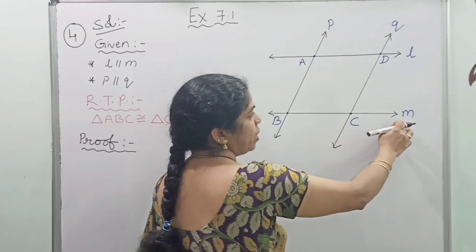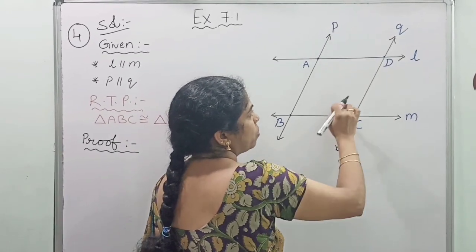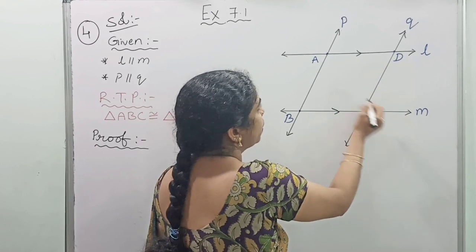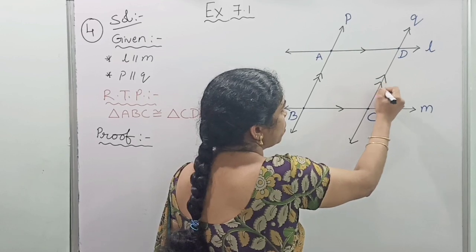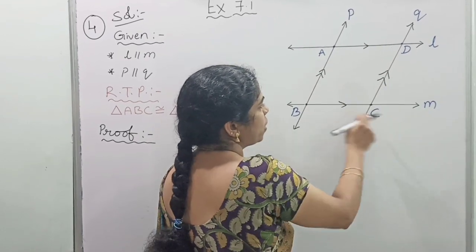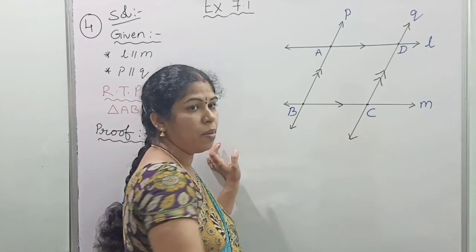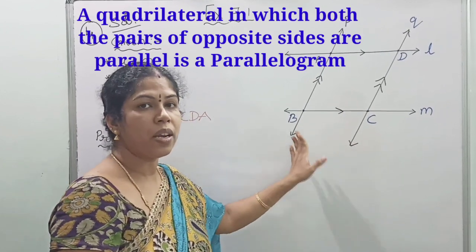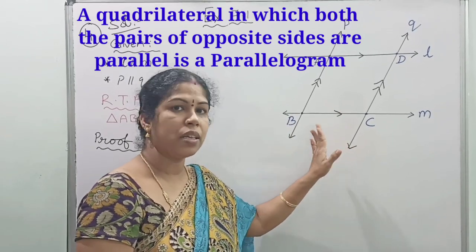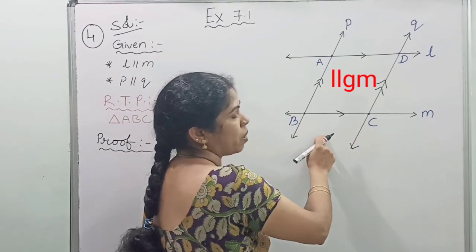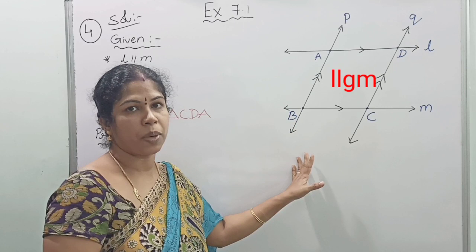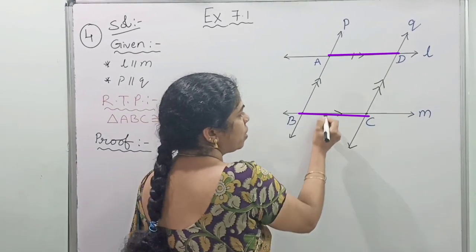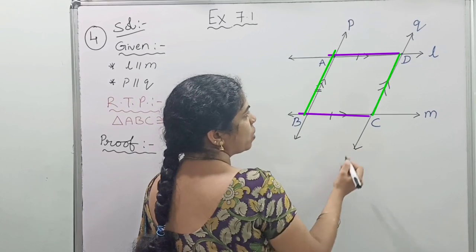Given that lines L and M are parallel, intersected by another two parallel lines P and Q. So L is parallel to M and P is parallel to Q. The figure formed is quadrilateral ABCD, in which both pairs of opposite sides are parallel, so it is a parallelogram. The properties of parallelograms state that opposite sides are parallel and equal, so AD equals BC and AB equals DC.